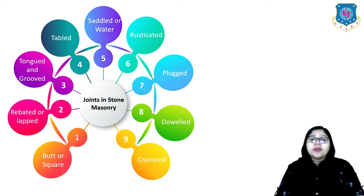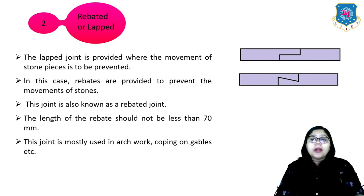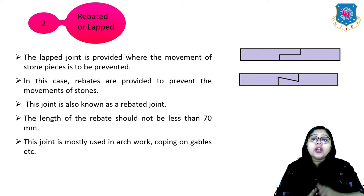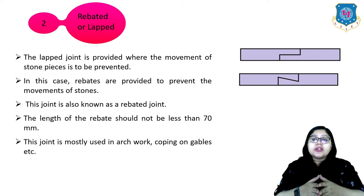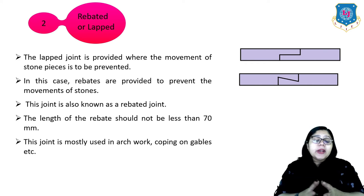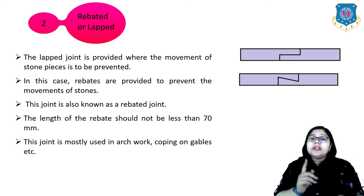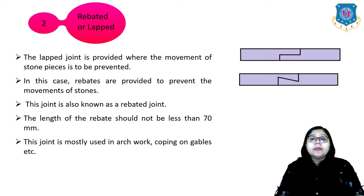The second type is the rebated or lapped joint. This joint is provided where the movement of stone pieces is to be prevented. Rebates are provided to prevent the movement of the stones. The length of the rebate should not be less than 17 mm, and the joint is mostly used in archwork, coping or the gibbons.